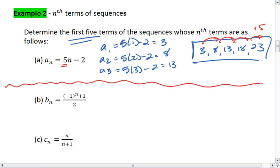Okay, let's try b_n now. For the first term, I plug in 1. So I get negative 1 to the 1 plus 1 over 2, which is negative, or just 0 over 2, which is 0.